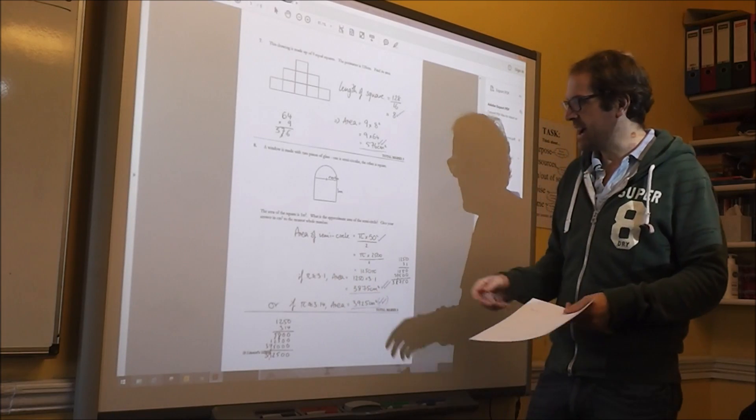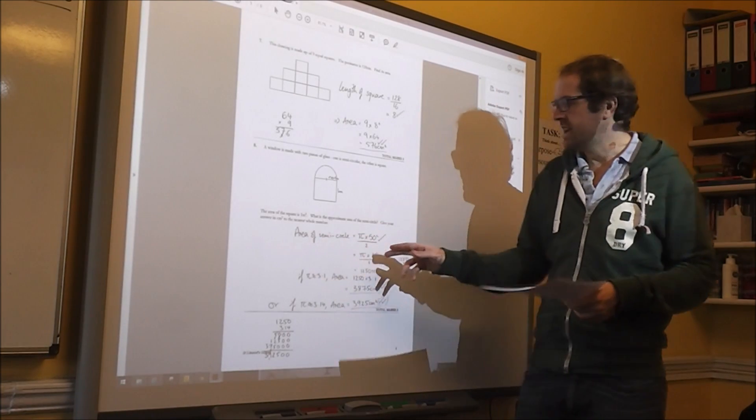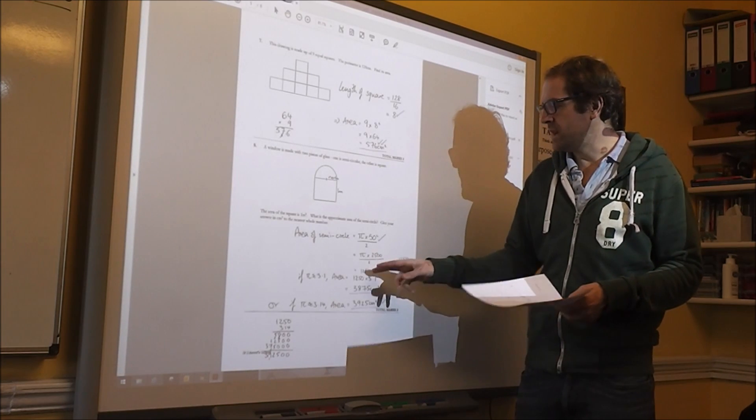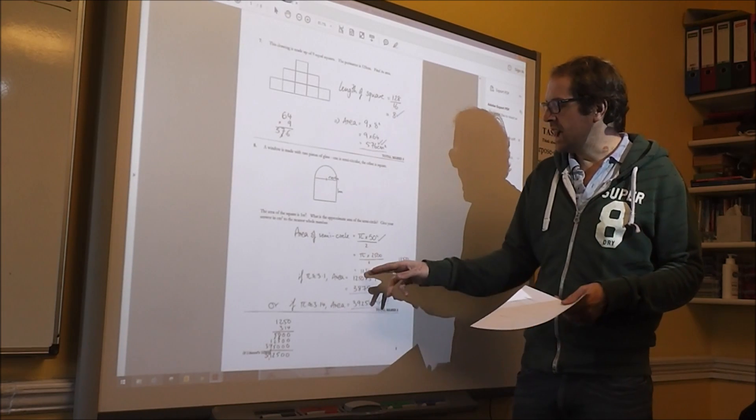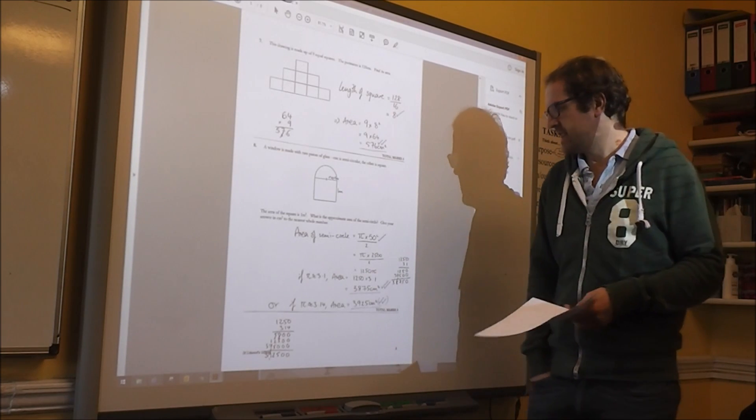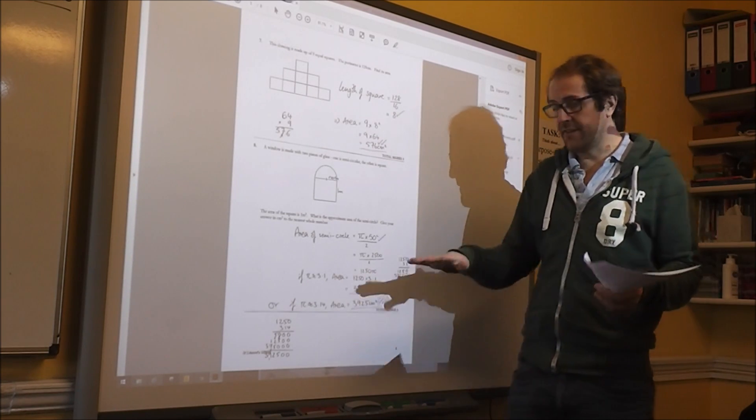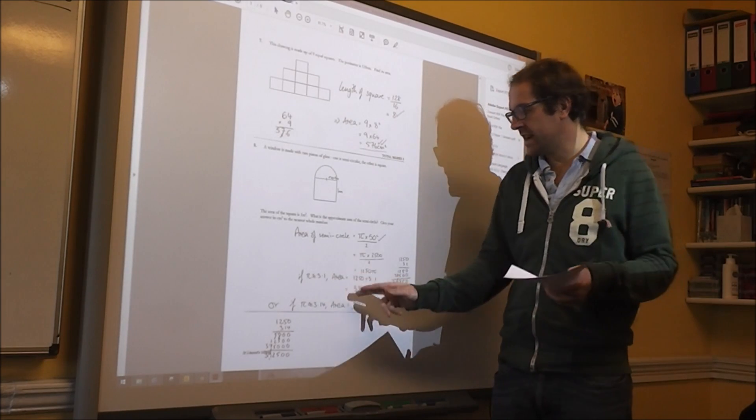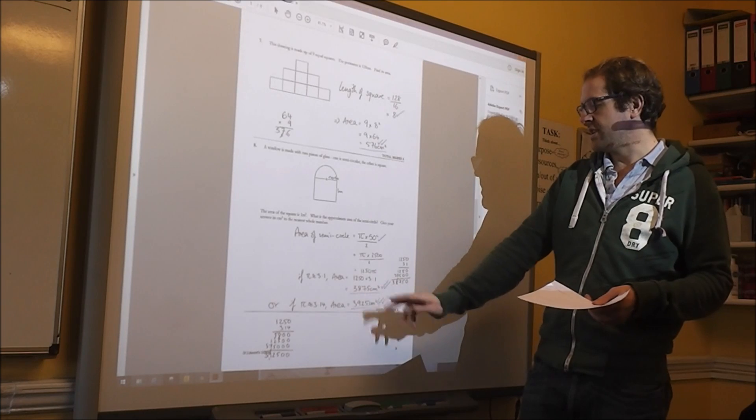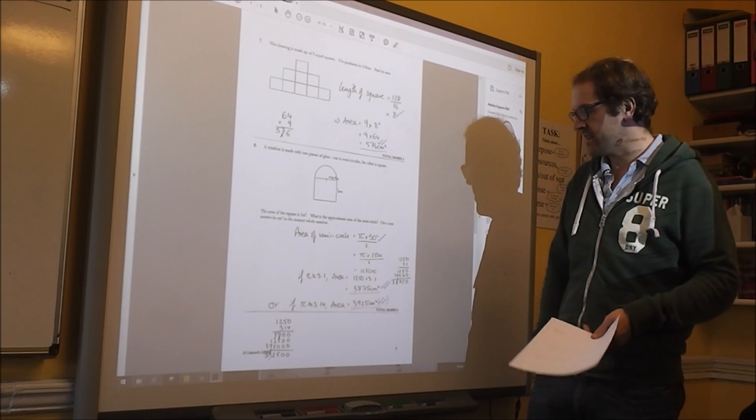So the approximate area of the semicircle is pi times 50 squared over 2, which I cancelled the 2, 1,250 pi cm squared. And then I said if pi is approximately 3.1, it would be this, 3875 cm squared.